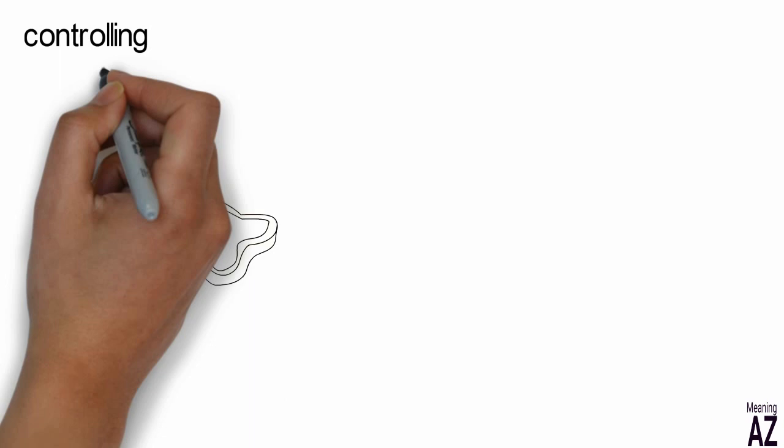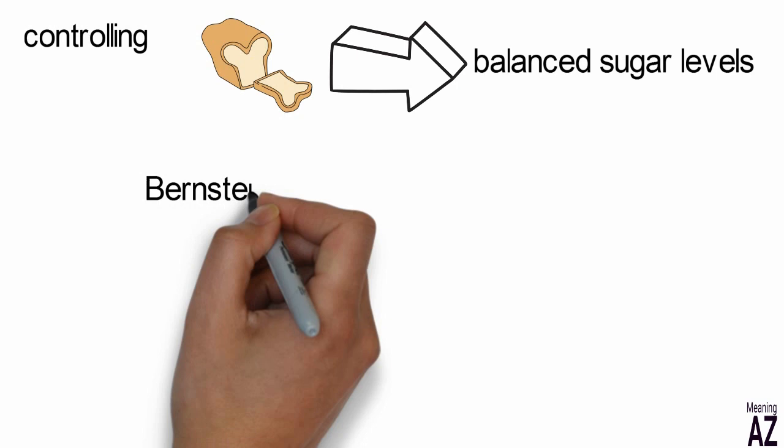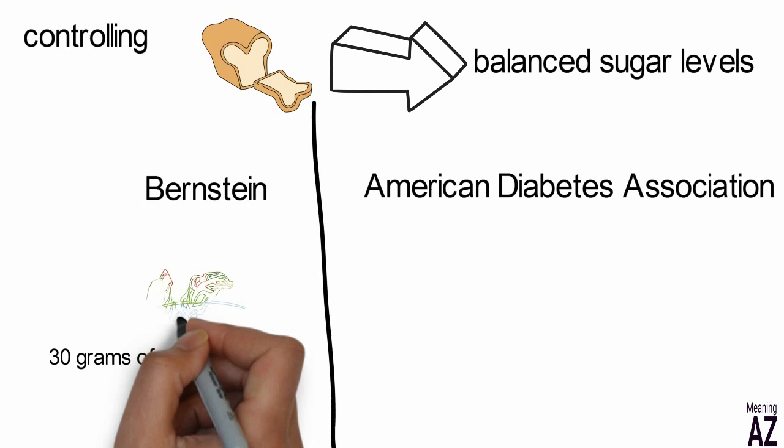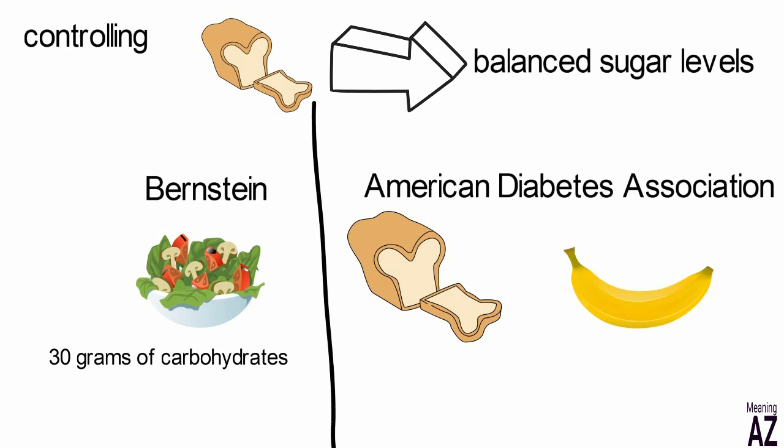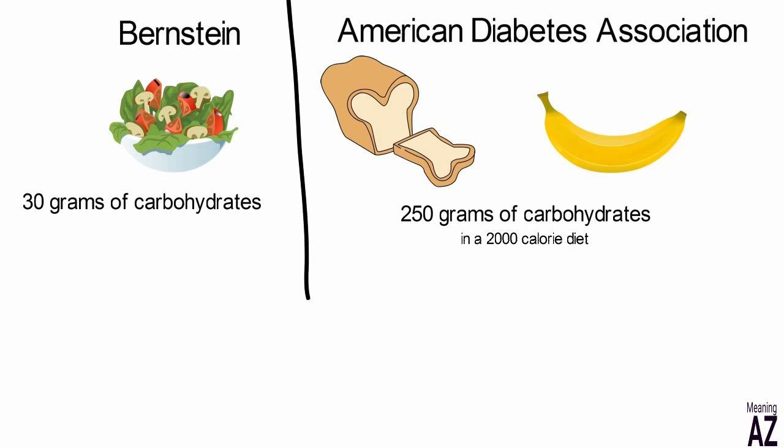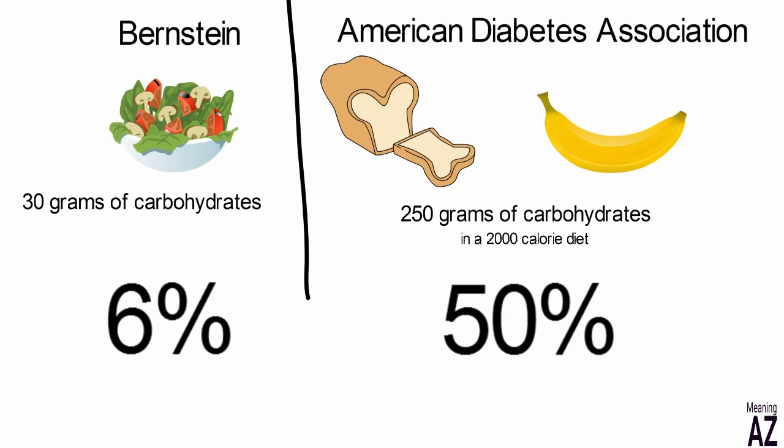Because the focus is on controlling carbohydrates, it's very easy to achieve balanced sugar levels throughout the day. The daily amount of carbohydrates recommended by Bernstein is 30 grams, compared to the recommendations of the American Diabetes Association which specified 250 grams of carbohydrates in a 2000 calorie diet. To illustrate, Bernstein recommends that the amount of carbohydrates represent only about six percent of the daily diet compared to the 50 percent recommended by the American Diabetes Association.